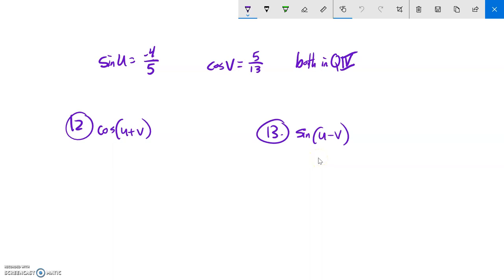This is Math 142, the final practice, and I'm going to do questions 12 and 13 together because they both have the same initial conditions. I know something about angle u: the sine of angle u is negative four-fifths. I know something about angle v: the cosine of it is five-thirteenths, and they both terminate in quadrant 4.